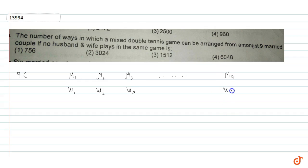Now, we want to play a mixed double tennis game. For mixed double tennis, we need two men and two women. First, we have nine men. From these nine men, we need to choose any two men who will play in the game.